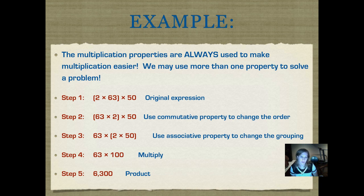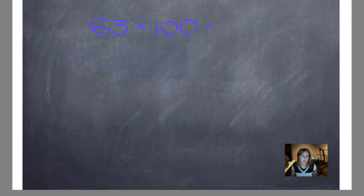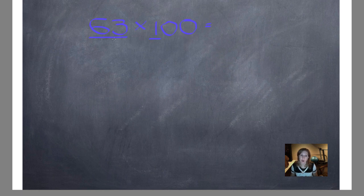I'm also going to show you a quick strategy to multiply those numbers together to make using your properties easier. You'll learn this very well tomorrow night, but for tonight we're just going to go over it quickly. This is a mental math strategy. I'm going to underline all of the digits that are not zeros — so all of the non-zero digits: 6 and 3 are not zeros, and 1 is not a zero. These two zeros don't have value. Now I'm going to multiply the underlined digits together: 63 times 1 is 63. Then I count how many zeros I have in both factors — there are no zeros in this factor, but there are two zeros in this factor, so I add two zeros after the 63. 63 times 100 equals 6,300.